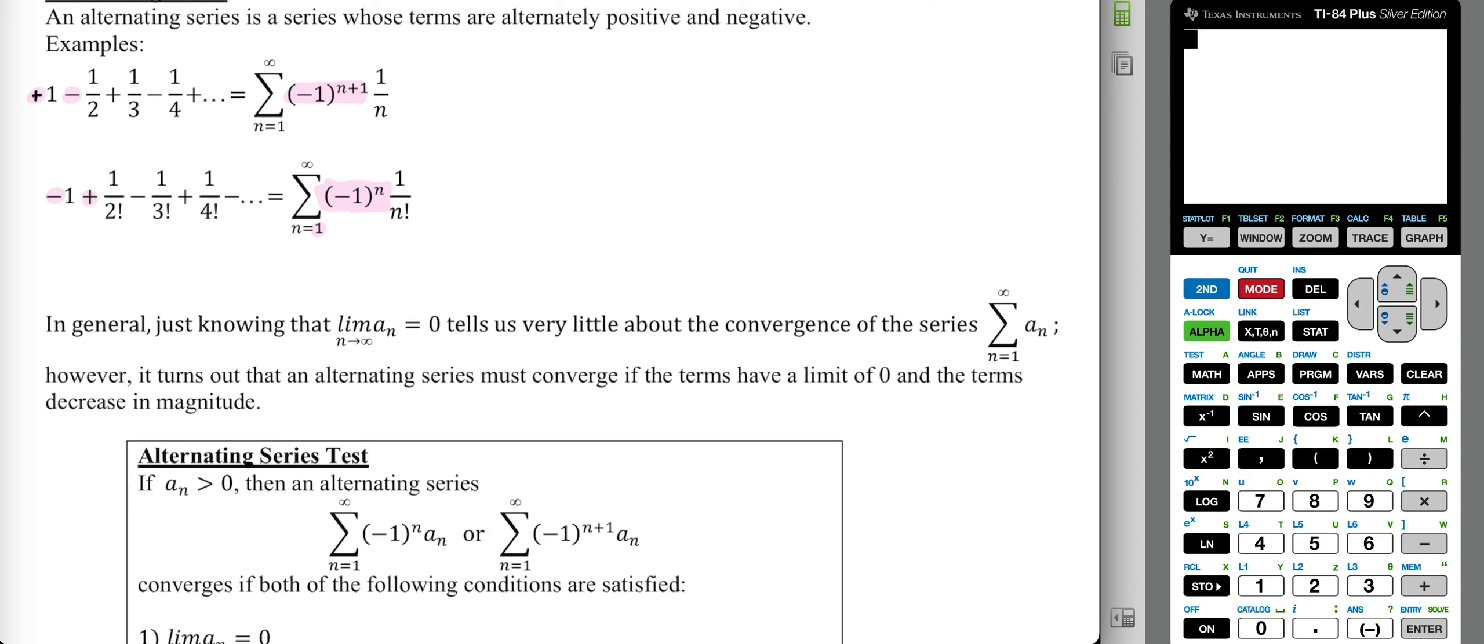The blurb here is very important. In general, just knowing that the limit as n approaches infinity of a sub n equals 0, if you're thinking back to the nth term test, if it's equal to 0, it tells us very little about the convergence of the series. If it was not equal to 0, then we would know a little bit more in terms of divergence. But if it's equal to 0, that's where it was inconclusive.